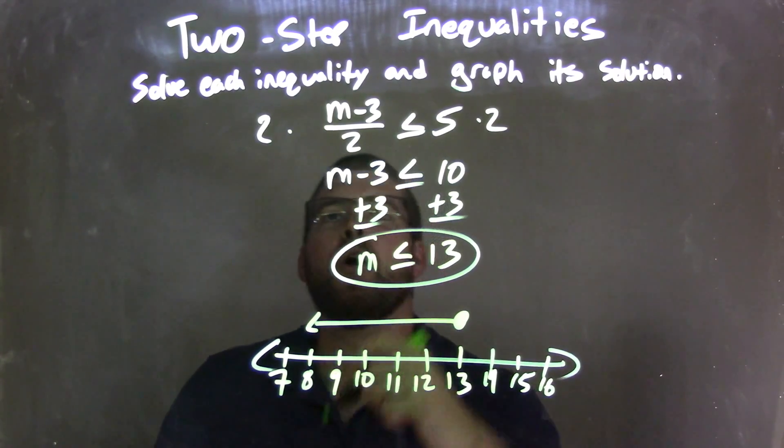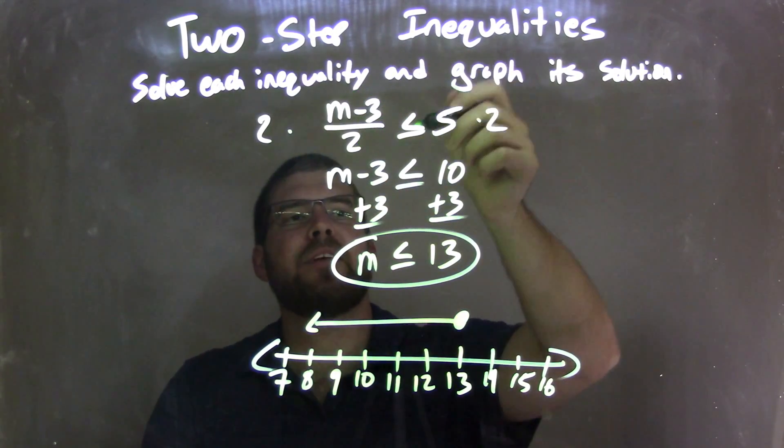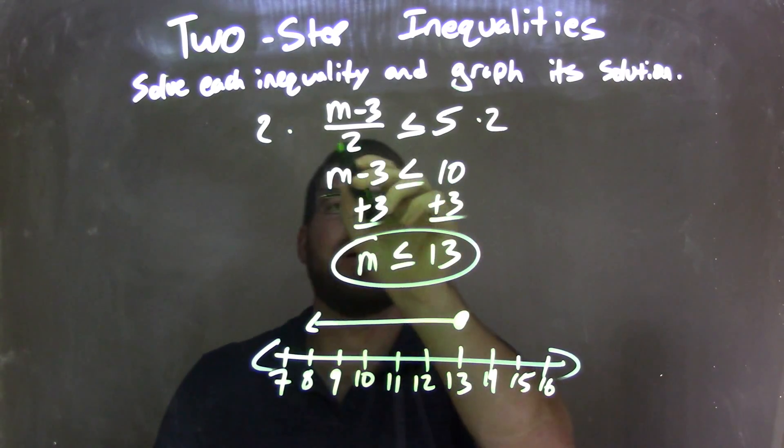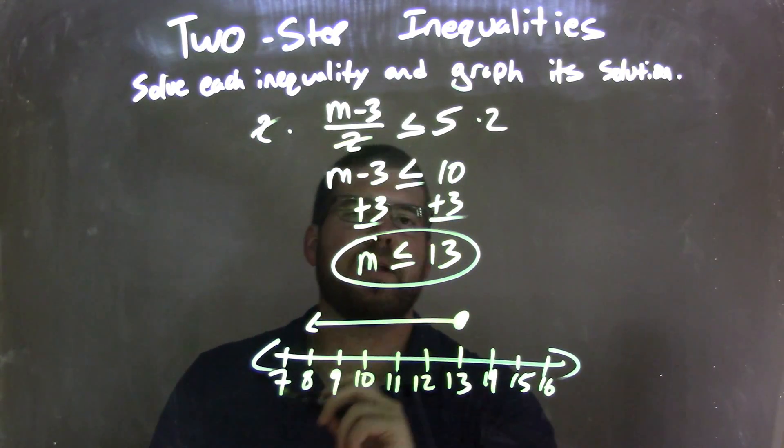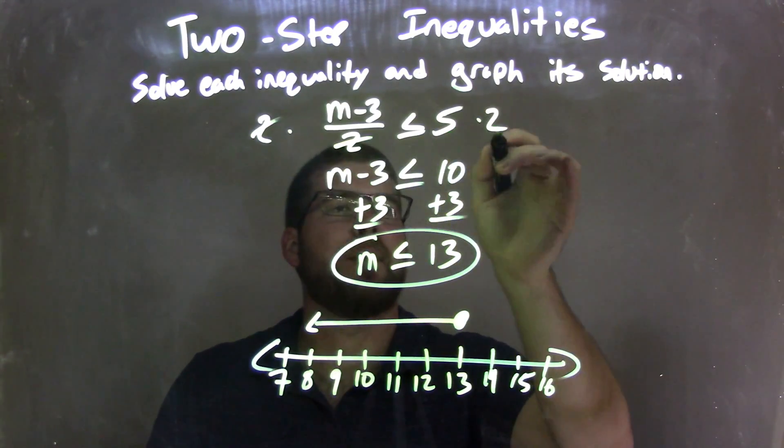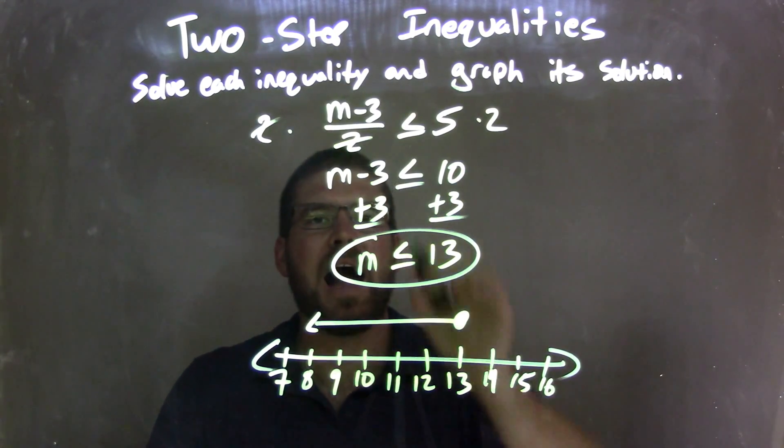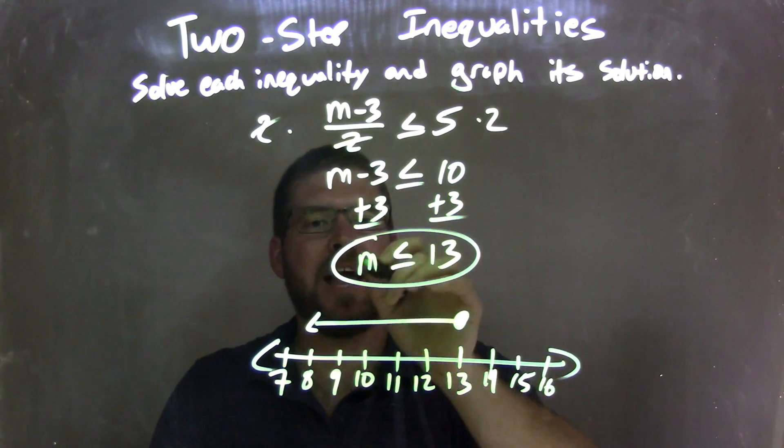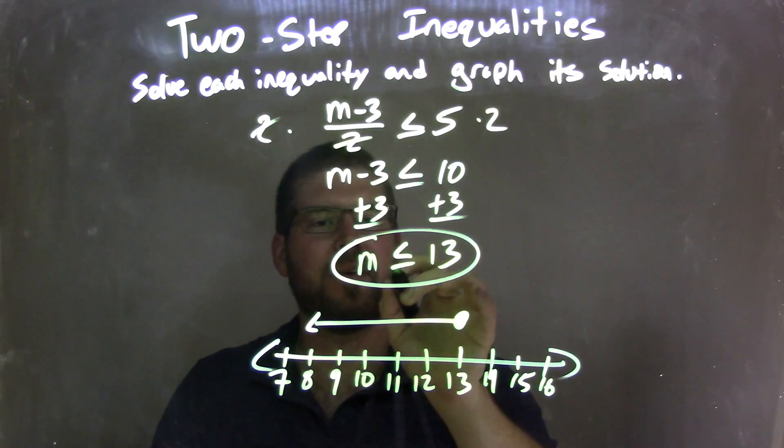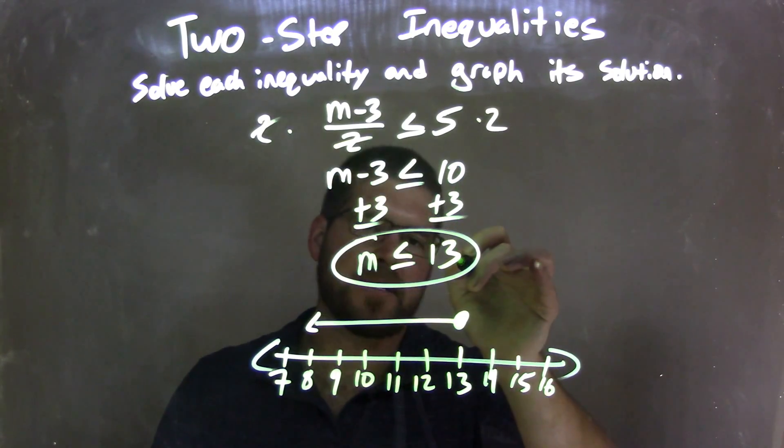So let's recap. We have m minus 3 over 2 is less than or equal to 5. I multiply 2 to both sides to eliminate it right there, giving me an m minus 3 on the left is less than or equal to 5 times 2, which is 10 on the right. I added a 3 to both sides, giving me m isolated on the left, and it's less than or equal to 10 plus 3 being 13 on the right.